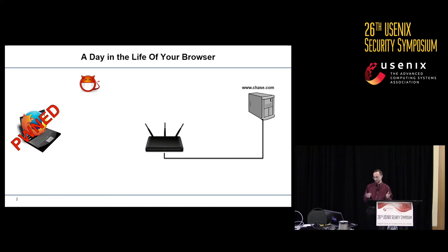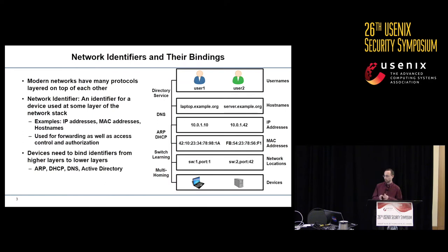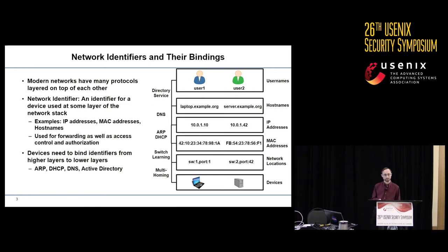Each of these phases is a result of insecure identifier bindings. To understand that, we need to look at the way modern networks are put together with a bunch of protocols layered on top of each other. Each of these layers has a different identifier for a device — IP addresses, MAC addresses, hostnames, and so forth. The figure on the right shows the common layers in a modern network and the different identifiers for devices at each of those layers.